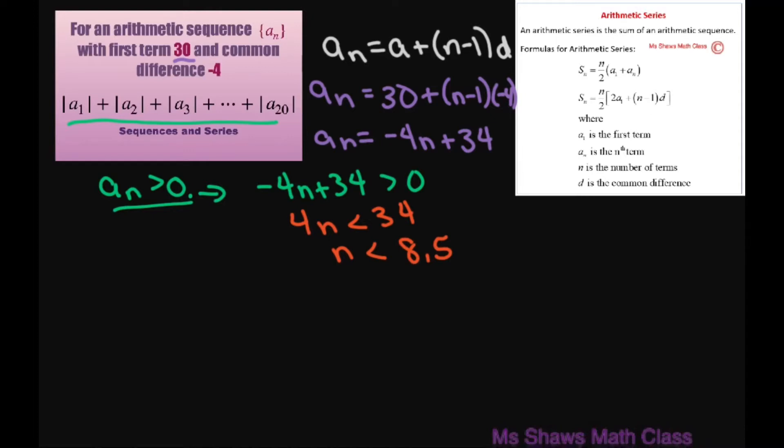So we're going to write the sum of the first 8 terms and then the sum of the next terms. That would be 9 to 20, so that's 12 terms. Then we're going to add these two together.